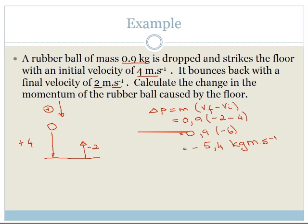The minus is the direction. And remember it says the momentum of the rubber ball caused by the floor. So if down was positive, what is minus? Minus would be up. And that makes sense because the floor is pushing the ball up.